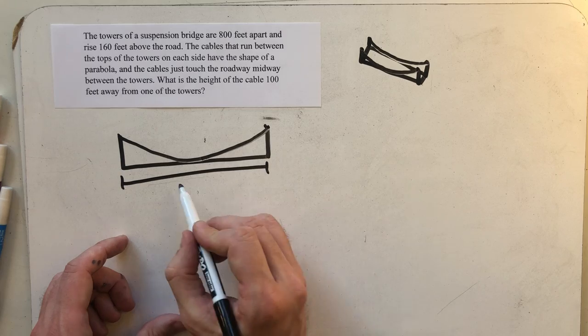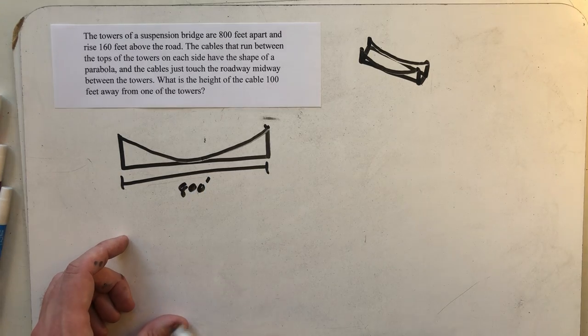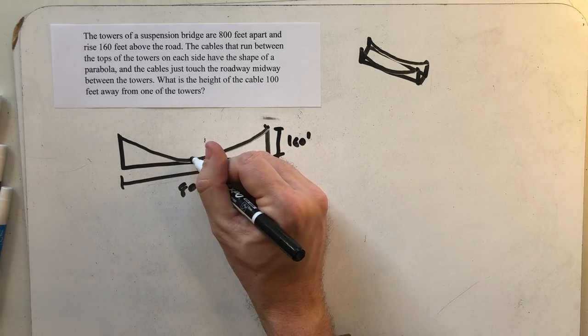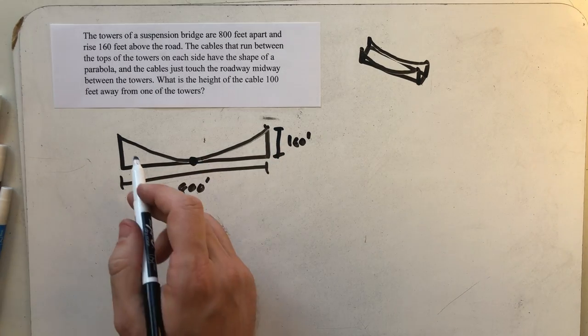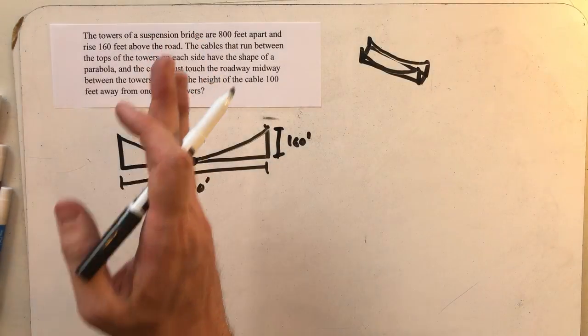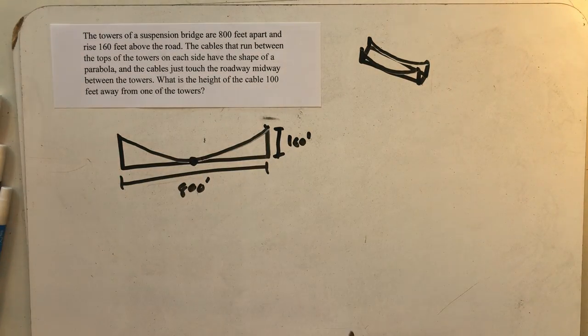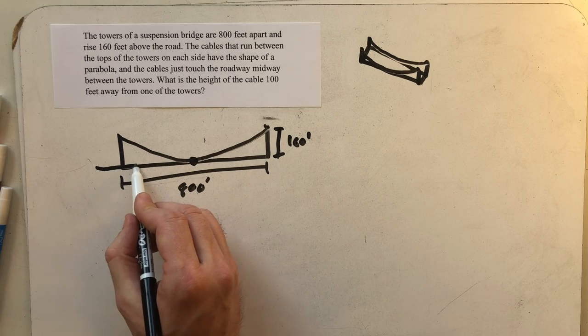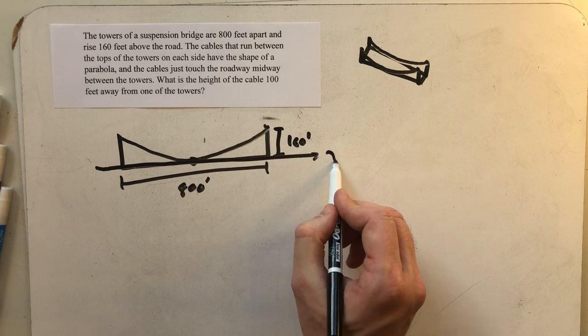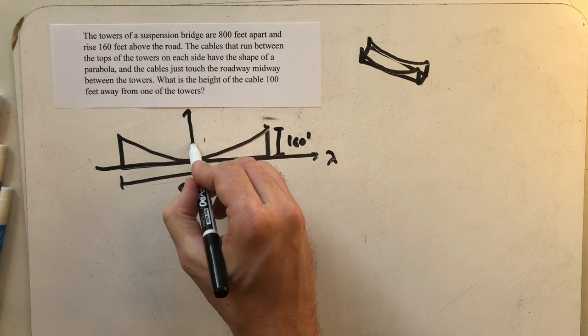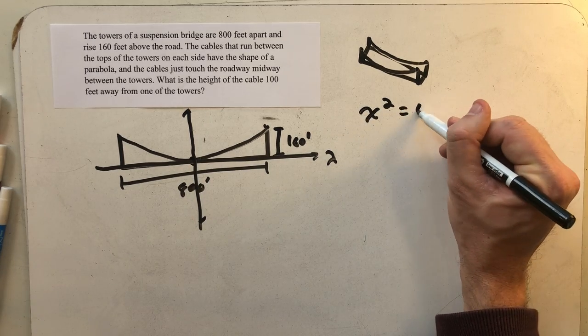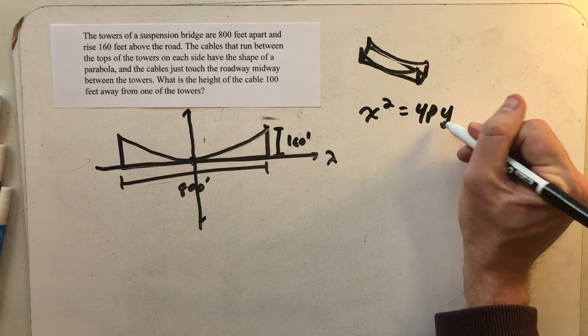I know that I got 800 feet between the two towers and that they are 160 feet tall. That being the middle and having symmetry on both sides, it has to be the vertex. So I think the most natural thing to do is to think about an x-axis on the road and then this y-axis perpendicular to it, letting the vertex be at the origin, allowing us to think about this parabola as x squared equals 4py.